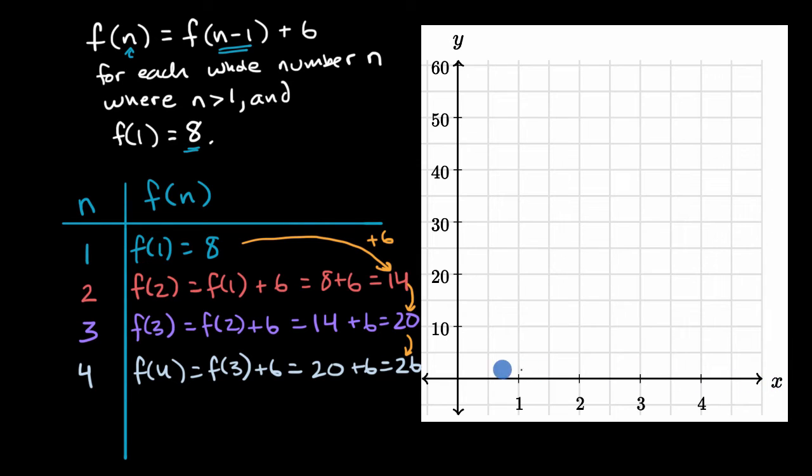So let's graph it here. And actually, instead of calling this the x-axis, let me call this the n-axis. And the y-axis, let's just call that y is equal to f of n. And so let's take that first point. When n equals one, the value of our function is eight. One, eight, it gets you right about there. Then when n is two, we get to 14. Two, 14, right about there.